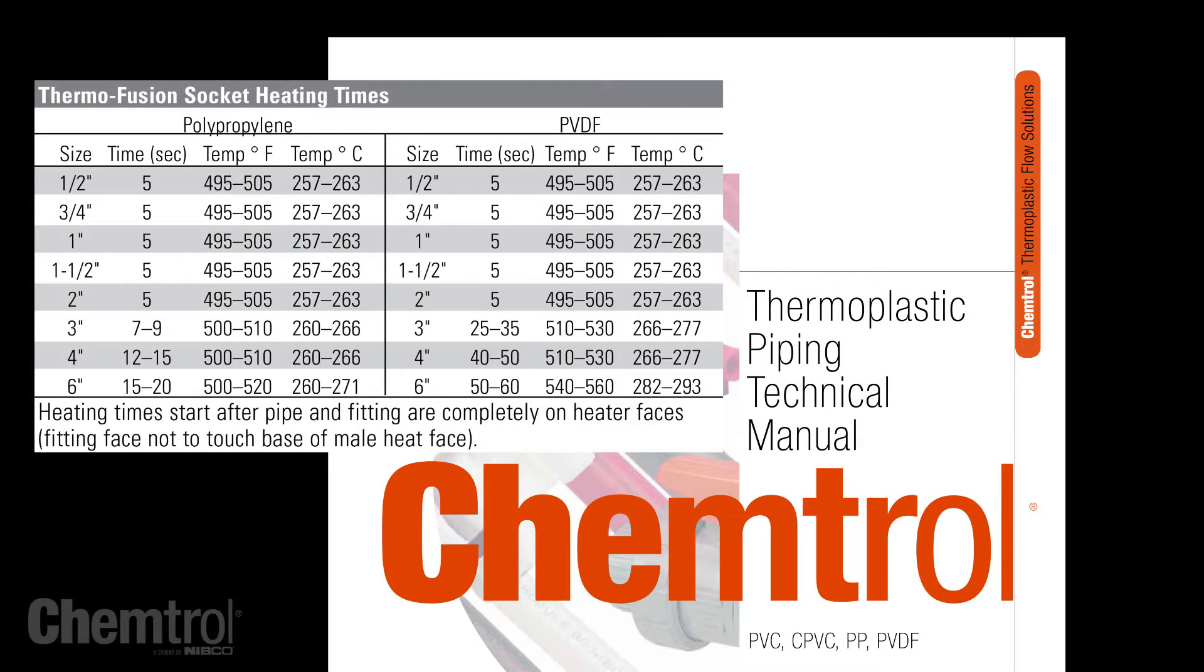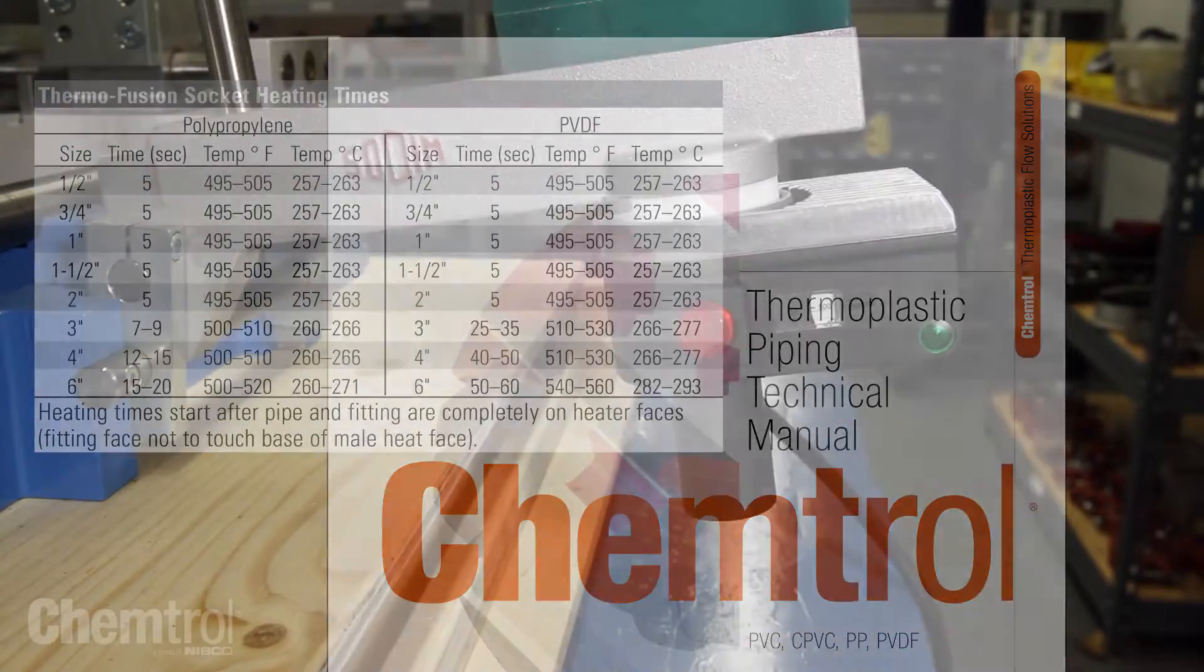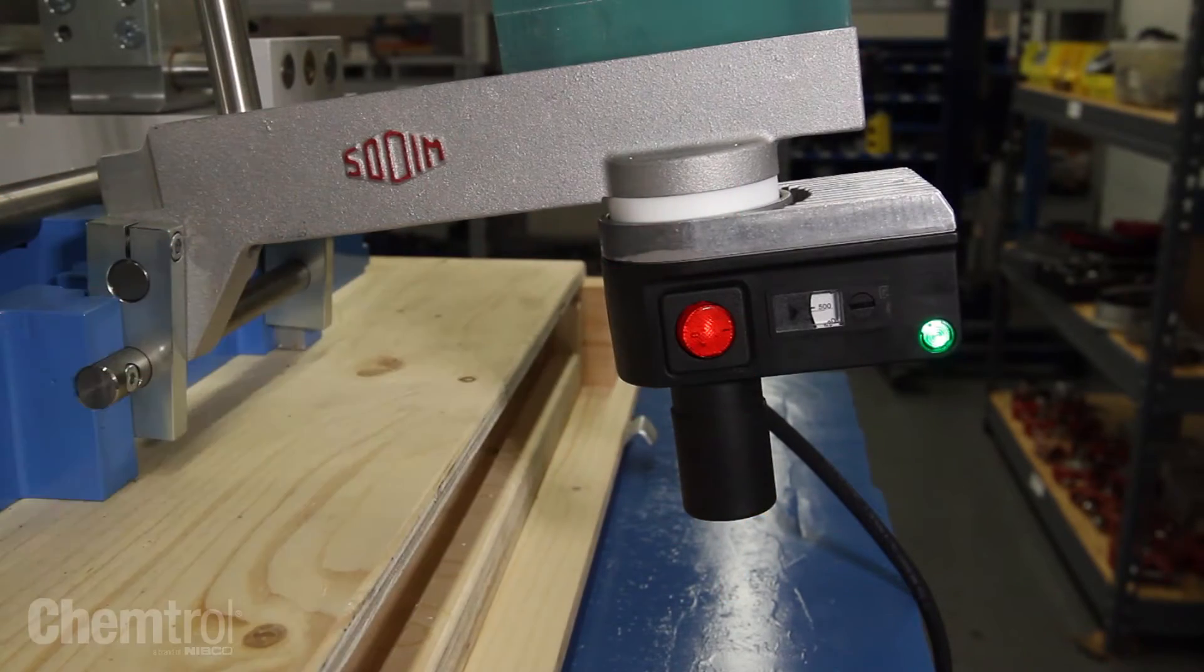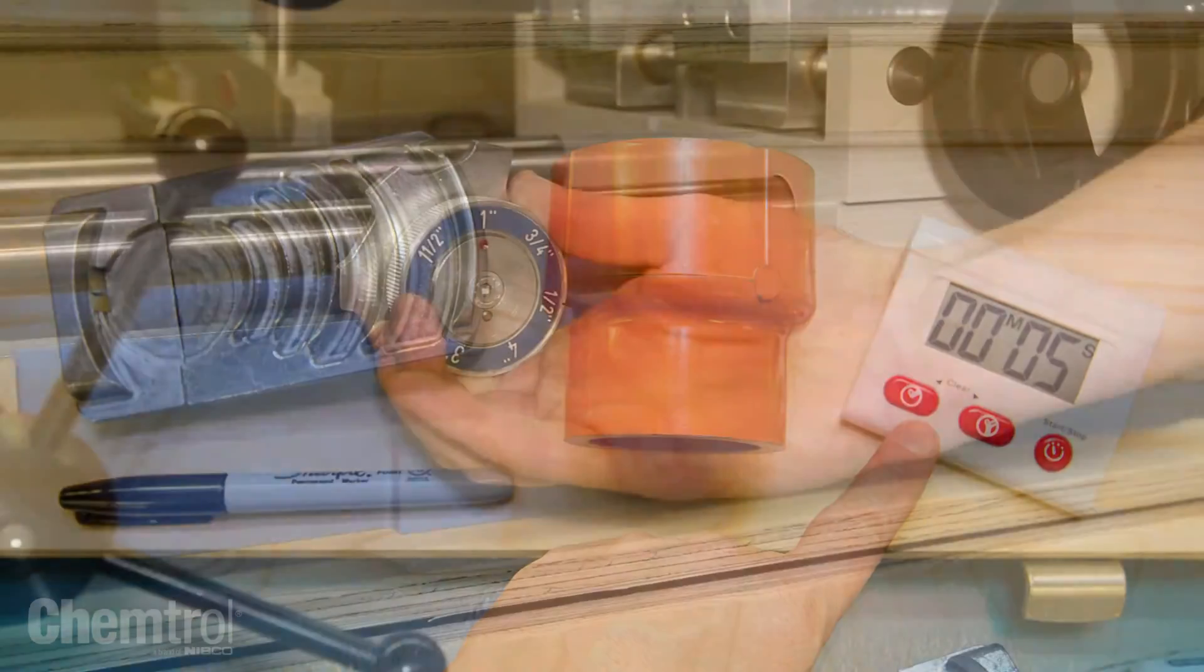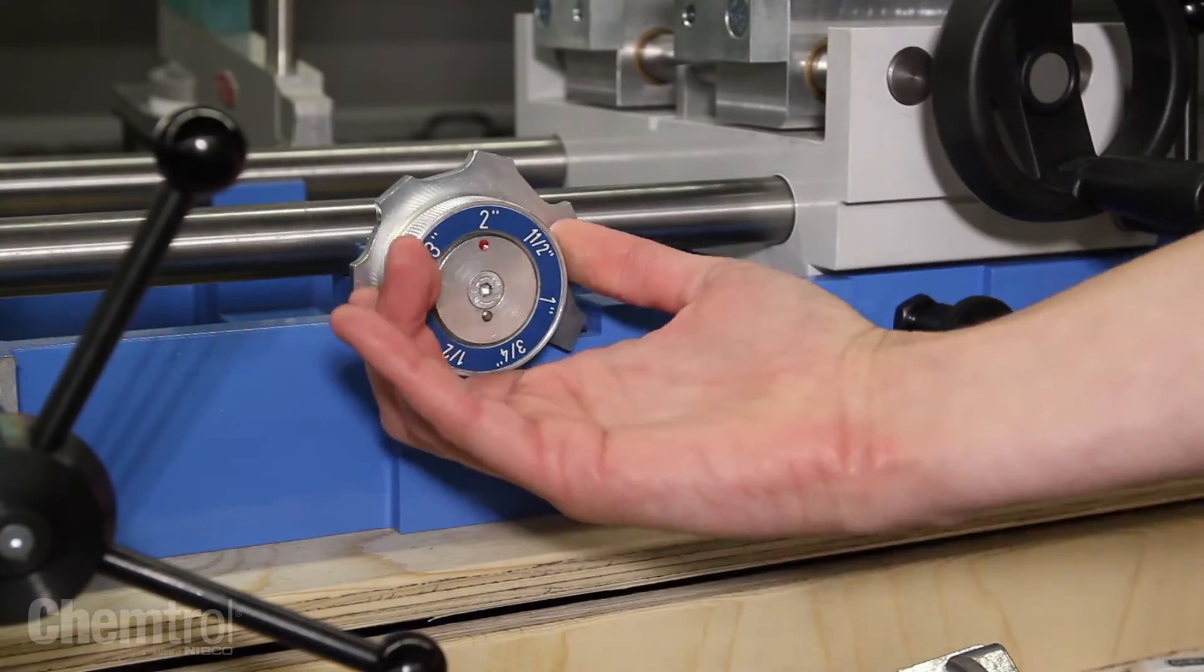Following the time and temperature chart published in the Chemtrol Technical Manual, set the temperature on the heating element and set the appropriate time in the timer. Set the dial on the front of the machine for the appropriate pipe.